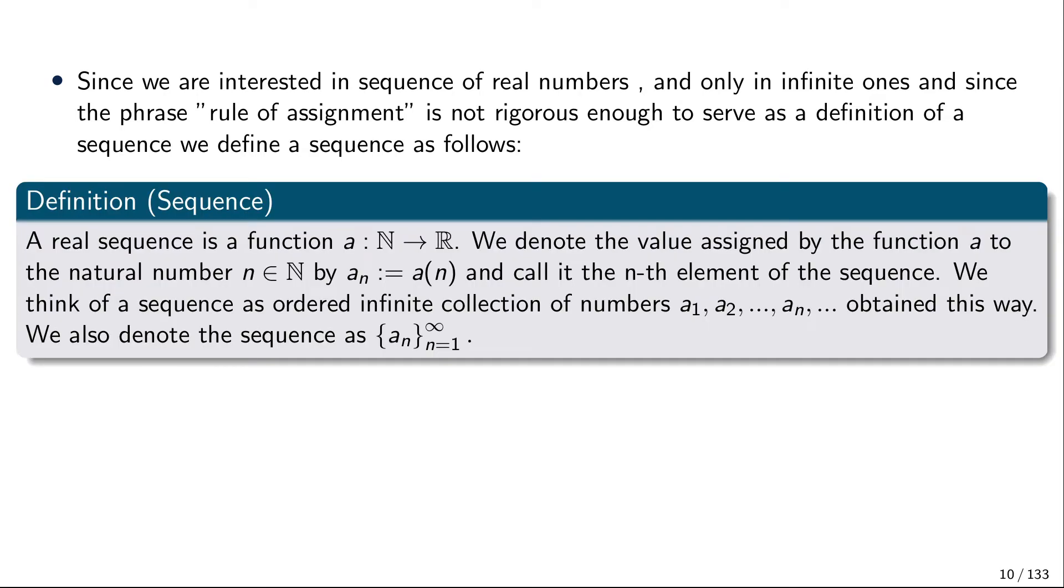A rigorous definition of a sequence is that a sequence is a function that assigns to every natural number a real number. This would be a real sequence, a sequence of real numbers. When we say function, this becomes very rigorous and the intuitive notion of rule of assignment is underlined. To each natural number we assign a real number. We denote by a_n the value of this function at the natural number n, and this a_n is called the nth element of the sequence. We think of a sequence as this ordered infinite collection of real numbers a_1 up to a_n, going indefinitely. This ordered infinite collection obtained by listing all values of the function is a sequence.